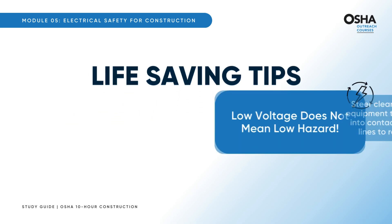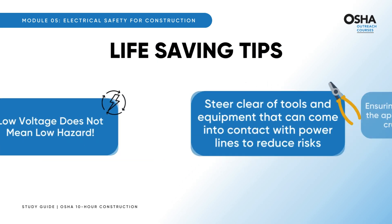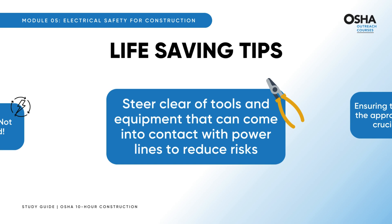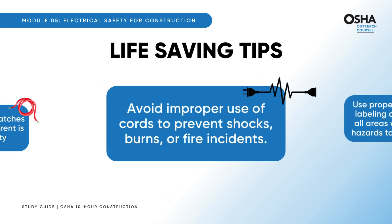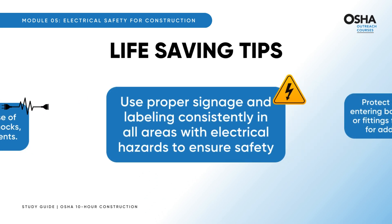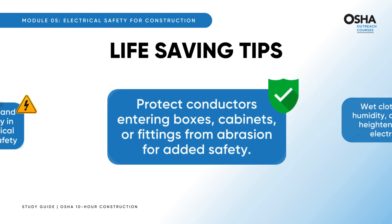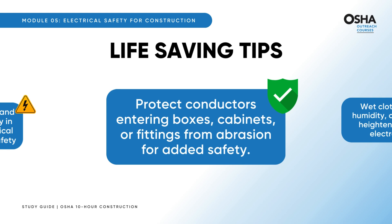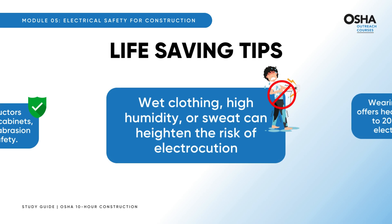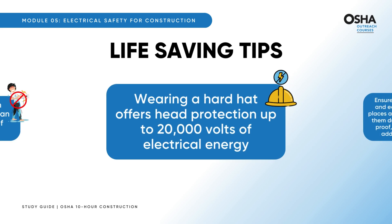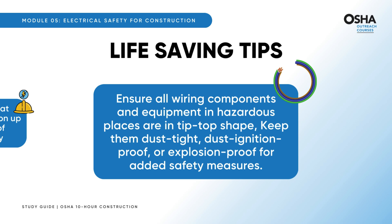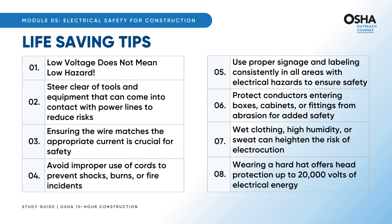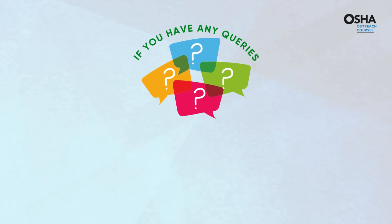Essential life-saving tips: always remember, low voltage does not mean low hazard. Steer clear of tools and equipment that can come into contact with power lines. Ensure the wire matches the appropriate current. Avoid improper use of cords to prevent shocks, burns, or fires. Use proper signage and labeling in all areas with electrical hazards. Protect conductors entering boxes, cabinets, or fittings from abrasion. Note that wet clothing, high humidity, or sweat can heighten the risk of electrocution. Wearing a hard hat offers head protection up to 20,000 volts. Ensure all wiring components and equipment in hazardous locations are dust-tight, dust-ignition-proof, or explosion-proof.